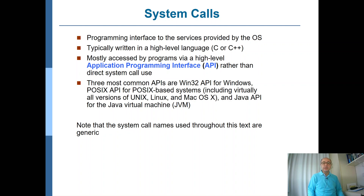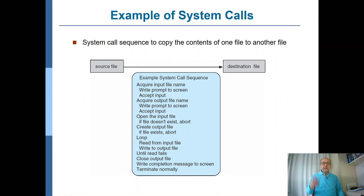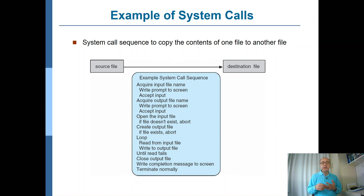Note that the system call names discussed here are generic — in specific systems the names could be slightly different, but the basic ideas are preserved. For example, to copy a file: you first get the name of the file to be copied and the destination location, then try to open the file. If opening fails, you give an error message and abort. If successful, you create the output file — which may also fail if the file already exists and overwriting is not permitted.